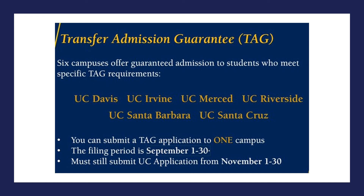The Transfer Admissions Guarantee is offered at six campuses. It allows you to get guaranteed admission if you meet specific transfer admission requirements, which change every academic year — so be sure to meet with a counselor to confirm eligibility. You can only submit a Transfer Admissions Guarantee application to one campus. Every year, the filing period is from September 1st through the 30th, and you still must submit a UC application from November 1st through the 30th. It is important that you meet with a counselor to update your educational plan and make sure you have the deadline set.